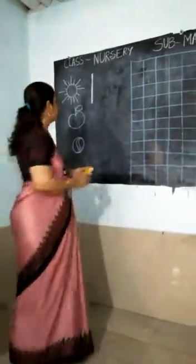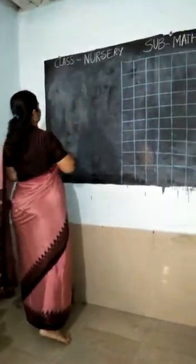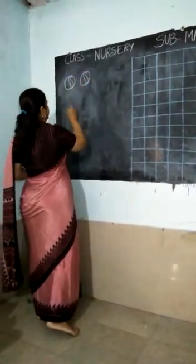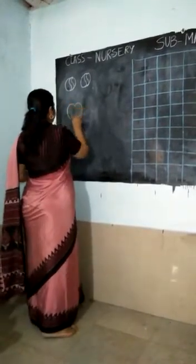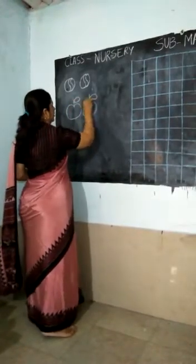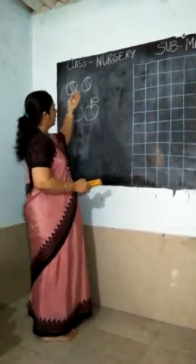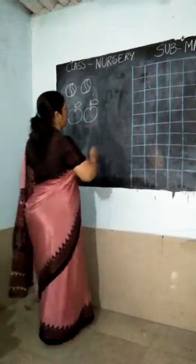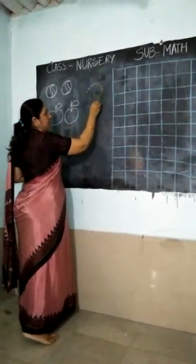Today we learn number two. How many balls? One and two. How many apples? One and two. Now press the number two.